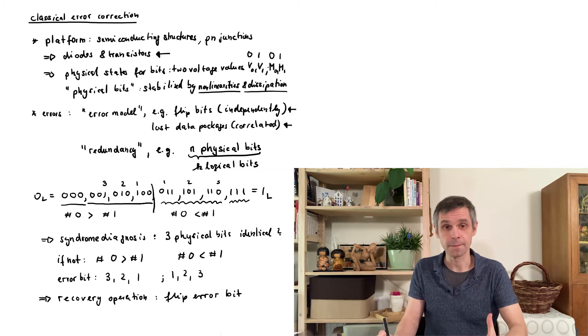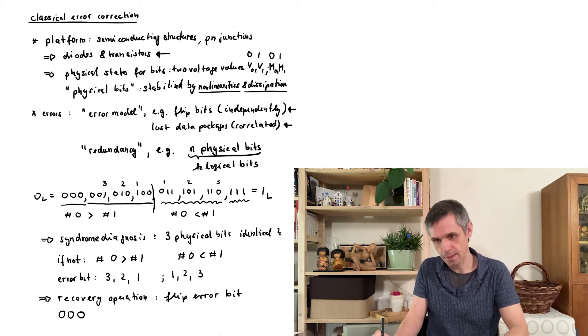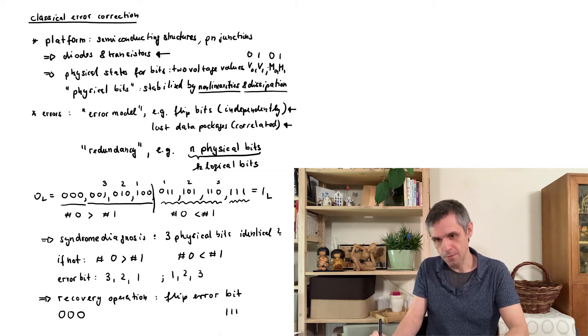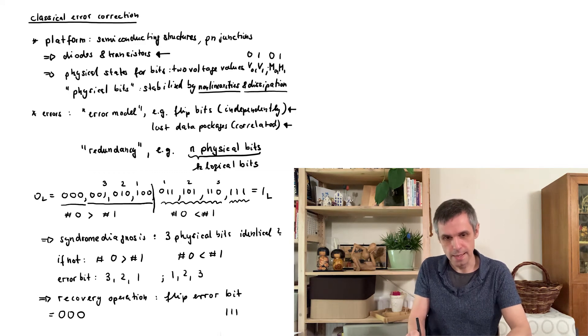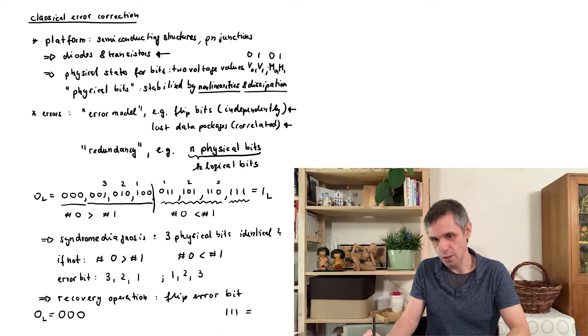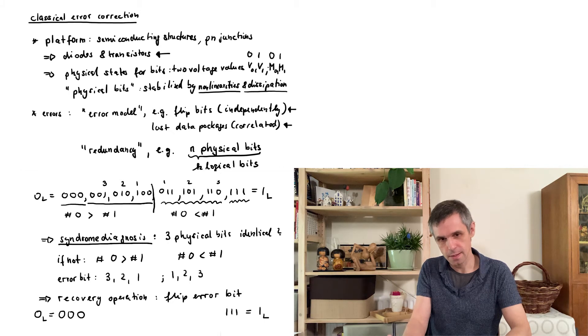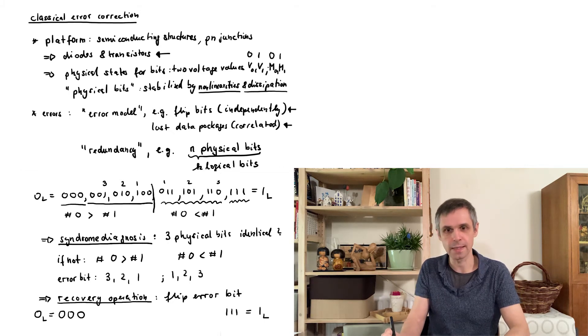And where we then end up with is that our physical system is back to only these two possible states where all the three physical bits have the same value. And so these are the states that we identify with our logical bits in the stage where they don't have any errors. So by carrying out such a syndrome diagnosis and this recovery operation, we can correct for this particular type of error.